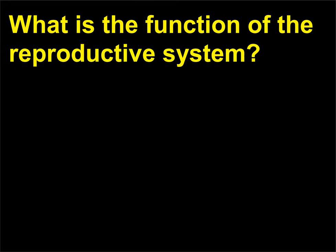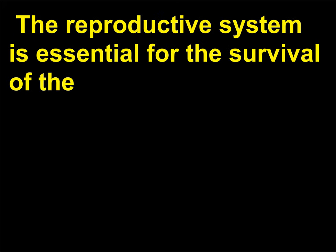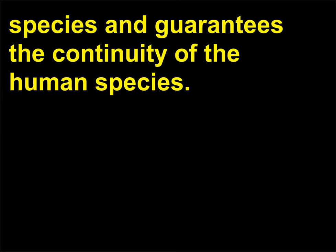What is the function of the reproductive system? The function of the reproductive system is to produce new offspring. The reproductive system is essential for the survival of the species and guarantees the continuity of the human species.